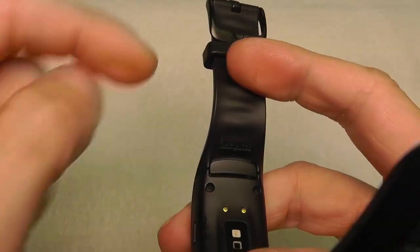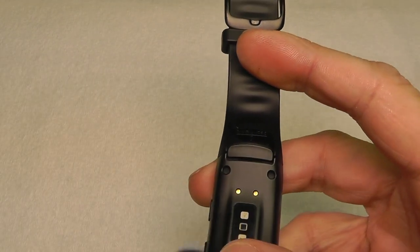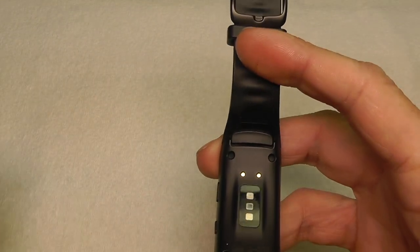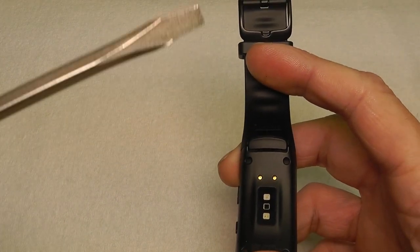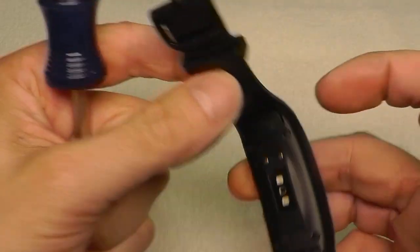How do we do this? We take a flathead screwdriver and poke this into the slot here on the back side. First I start by looking at the front.